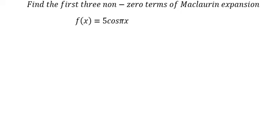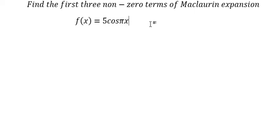Hello everybody! So today I will talk about calculus. The topic today is about Maclaurin expansion. We will find the first three non-zero terms of the Maclaurin expansion at x equals 5cos(x). I will show the technique of how to answer the question. We have the Maclaurin expansion should be like this.